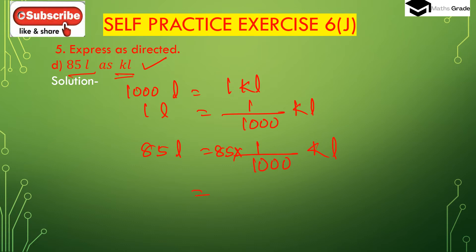85 multiplied by 1 divided by 1000 is 85 divided by 1000 kiloliter. In the denominator 1000 there are 3 zeros, and in the numerator there are only 2 digits. So we place 1 more zero before digit 8, giving 0.085 kiloliter. Therefore 85 liter is 0.085 kiloliter.